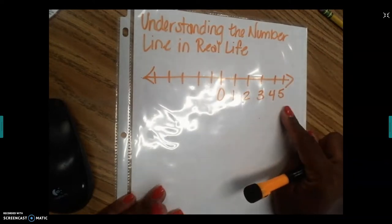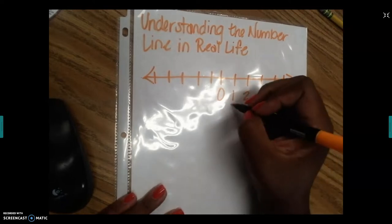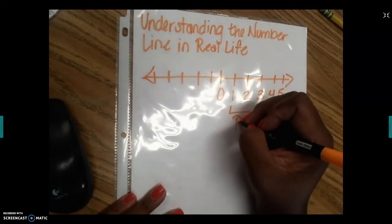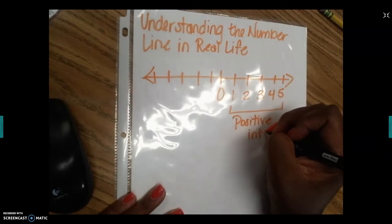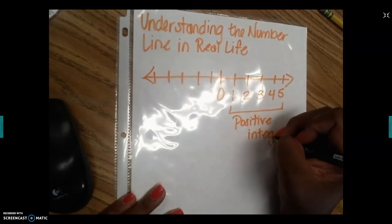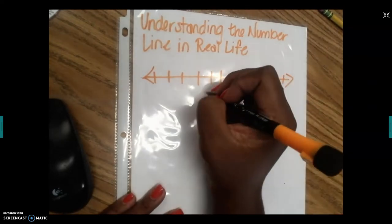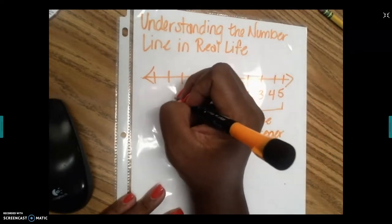Any number going to the right of zero is going to be a positive integer. And any number, of course, going to the left of the zero will be a negative integer.